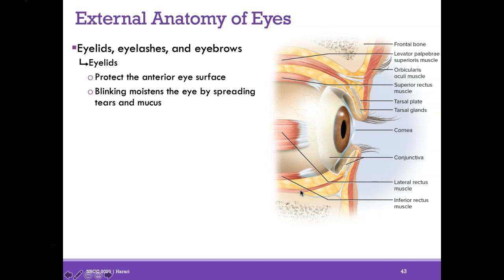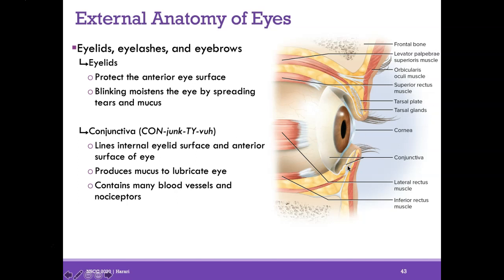Outside of the eye, we have accessory anatomy. The eyelids protect the anterior surface of the eye and help us blink, which spreads tears and mucus. The secretions from the lacrimal gland — tears — are spread as we blink. The conjunctiva is a very thin, transparent membrane that lines the internal eyelid surface and the anterior surface of the eye; it produces mucus via goblet cells to lubricate the eye. It also has many blood vessels and nociceptors, so the conjunctiva is very susceptible to pain.